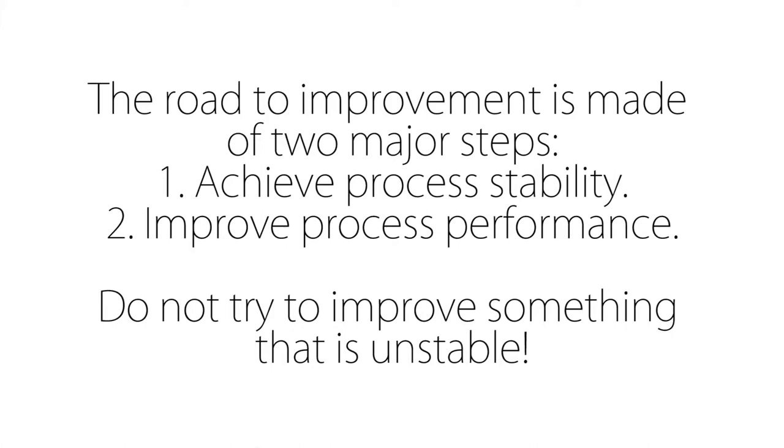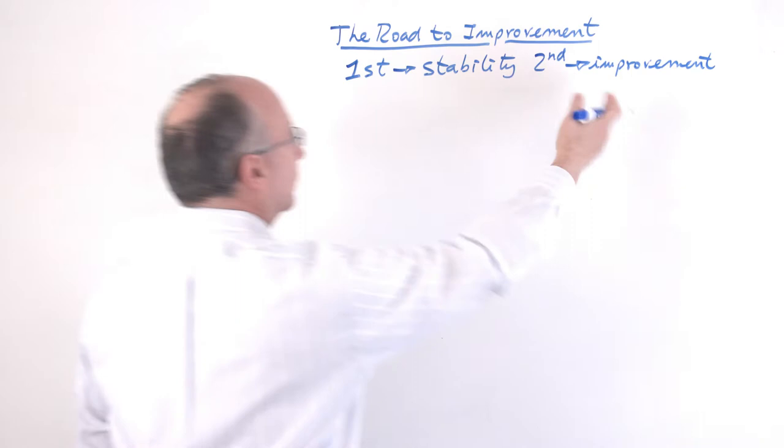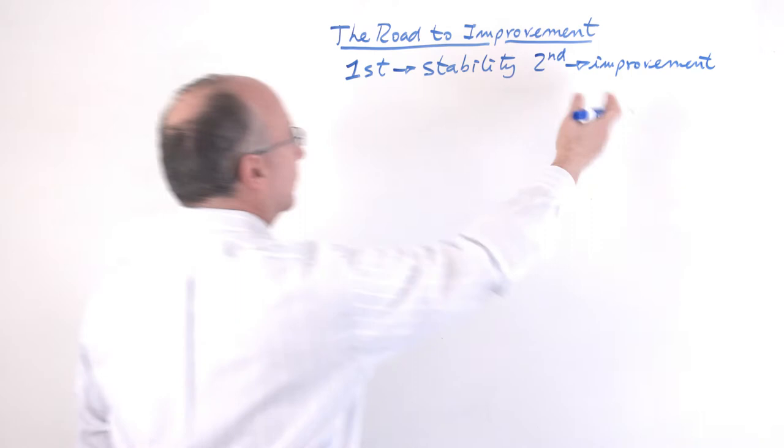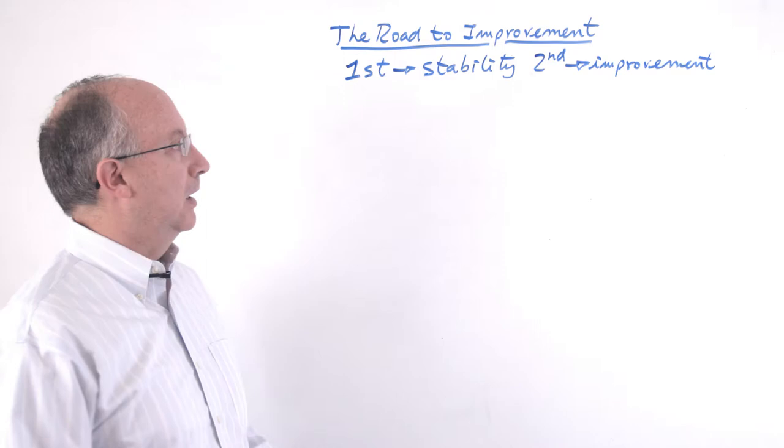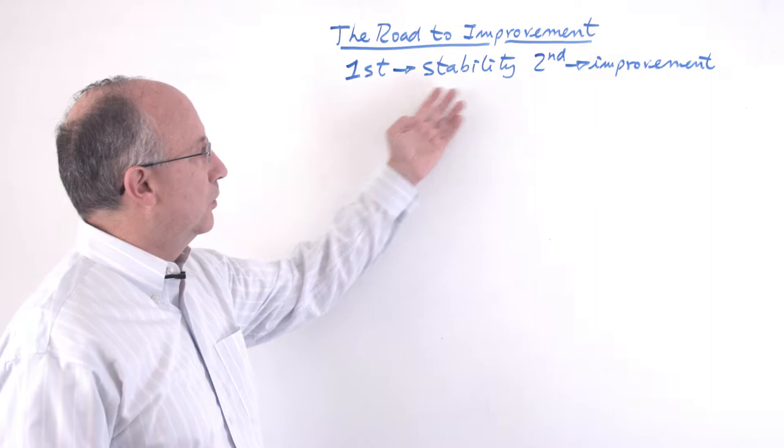This sequence is very important. We need to know that this is the right sequence because trying to improve something that hasn't been stabilized, it's like building on sand. You will have an edifice, a house or a tower and it's just going to fall over because it will not have a sustainable foundation. So this is the way to do it.